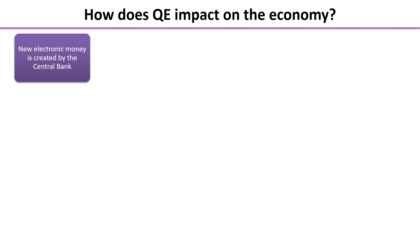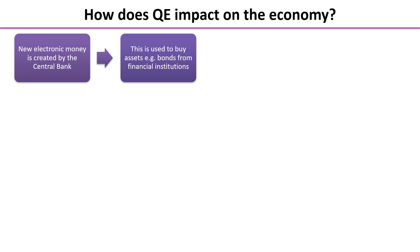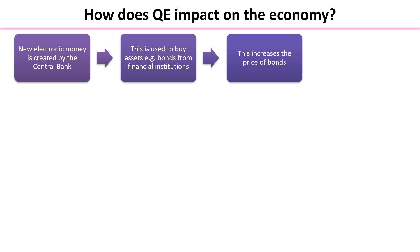How does it impact the economy? What is the transmission mechanism? So let's follow it through. This is like the flow chart of how QE works. The new electronic money is created by the central bank and that's used to buy those bonds back from financial institutions and pension funds etc.